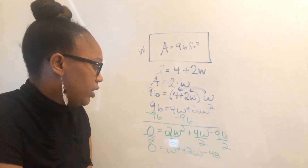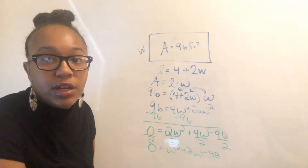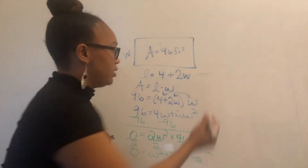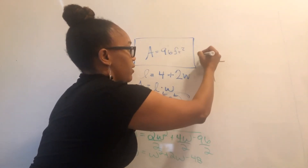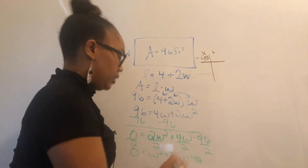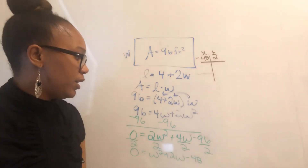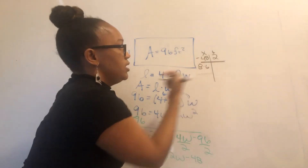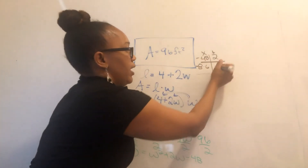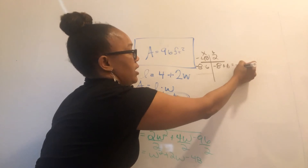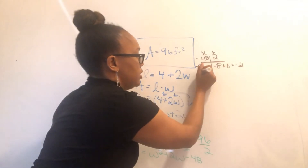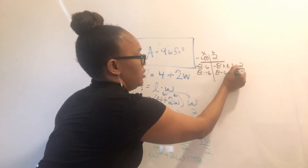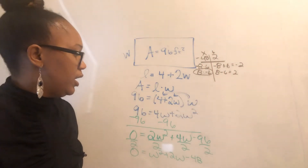We can try to factor this, use the quadratic formula, or complete the square — whichever you prefer. I'm going to try factoring. I need two factors of negative 48 that add to two. Eight times six is 48, so I try 8 and negative 6: negative 8 plus 6 gives negative 2, so switch signs to get 8 and negative 6. They multiply to negative 48 and eight minus six equals two — those are the factors.